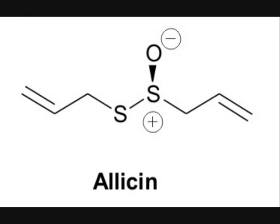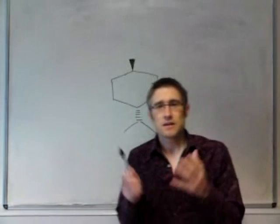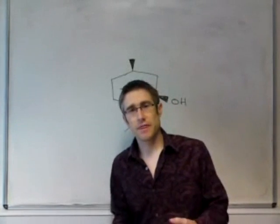In allicin the functional groups are quite unusual. We have alkenes on either end but the functional group in the middle is a cross between a disulfide, an SS linkage, and a sulfoxide. And many organic professors would struggle to name that functional group but it's known as a thiosulfenate.